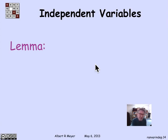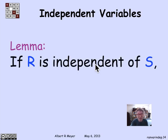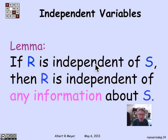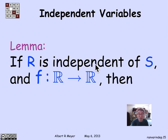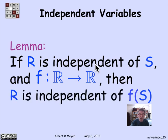If R is independent of S, then R is really independent of any information about S. More precisely, for any arbitrary total function f mapping reals to reals, if R is independent of S, then R is also independent of f(S) — any fixed non-random transformation of S.